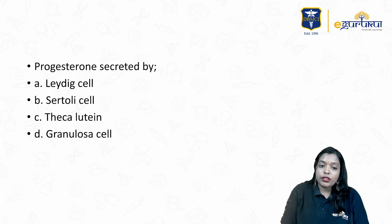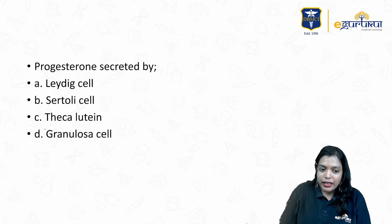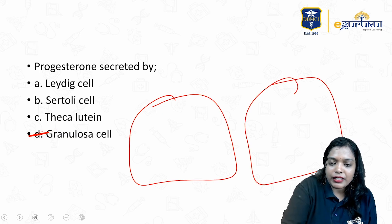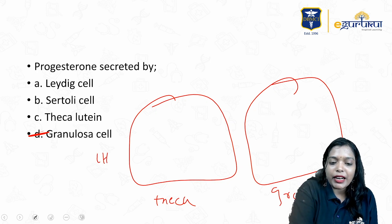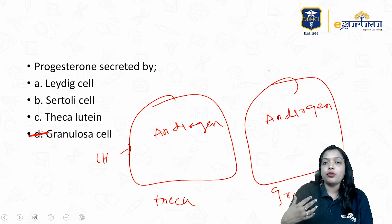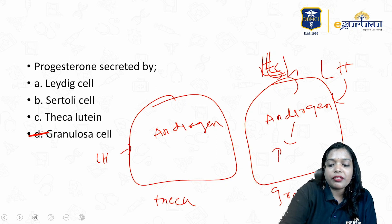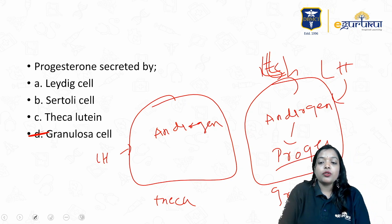MCQ 3: Progesterone is secreted by the luteinized granulosa cell. Normally we have theca cells and granulosa cells. When LH acts on the theca cell, it produces androgen. This androgen goes into the granulosa cell. When FSH acts on the granulosa cell, androgen is converted into estradiol. But if LH acts on the granulosa cell, then androgen gets converted into progesterone. So progesterone is released from the luteinized granulosa cell.